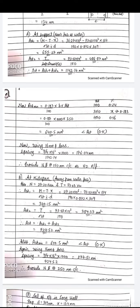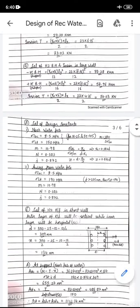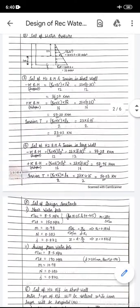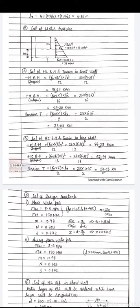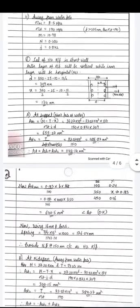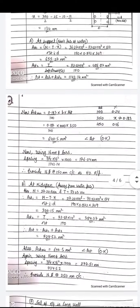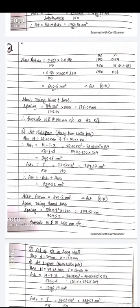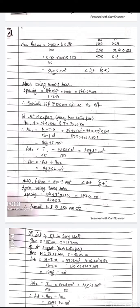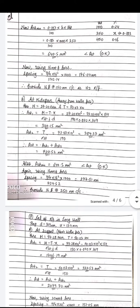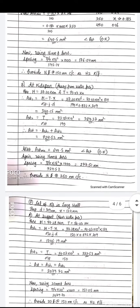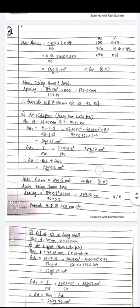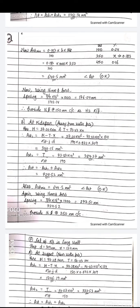At mid-span, Ast1 and Ast2 are calculated using σst = 190 N/mm² (away from water face). Total Ast = 724 mm², which is greater than Ast,min. Using 16 mm diameter bars, spacing = 277 mm. Provide 16 mm Tor @ 250 mm c/c as horizontal reinforcement away from water face.